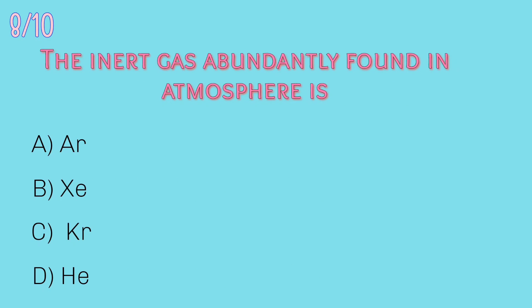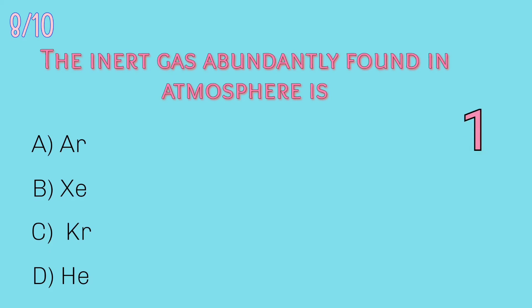Eighth question: which inert gas is most abundantly found in the atmosphere? — Ar, Xe, Kr, or He? Answer: Ar. Among all the gases given in the options, argon is the most abundant inert gas. The symbol of argon is Ar. The composition of argon in air is about 1%.